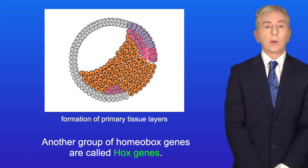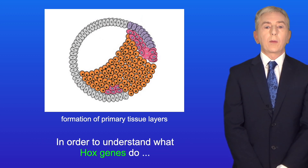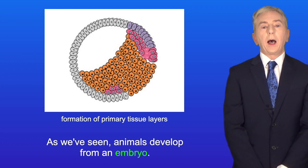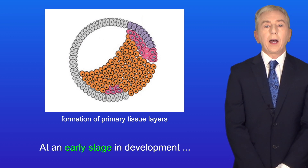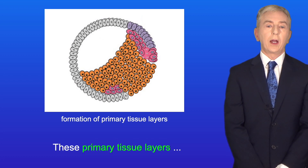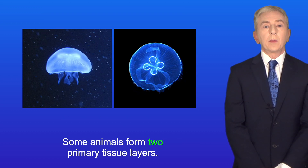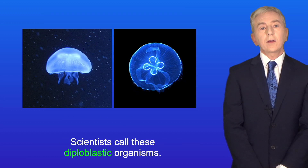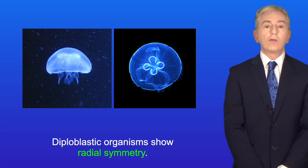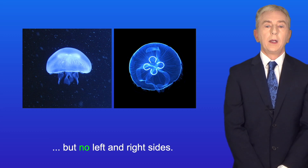Another group of homeobox genes are called HOX genes, and HOX genes are found in animals. In order to understand what HOX genes do, we need to look at the body plans of animals. Animals develop from an embryo, and at an early stage in development, the embryo begins to form layers of cells. These primary tissue layers go on to form the different structures in the animal's body. Some animals form two primary tissue layers — scientists call these diploblastic organisms, and a good example are jellyfish. Diploblastic organisms show radial symmetry; they have a top and a bottom, but no left and right sides.